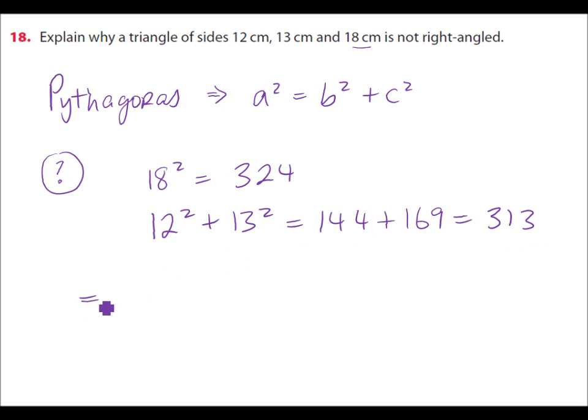Therefore, it cannot be a right-angled triangle. So we'll say that 18 squared does not equal 12 squared plus 13 squared. And therefore, it follows it's not a right-angled triangle.